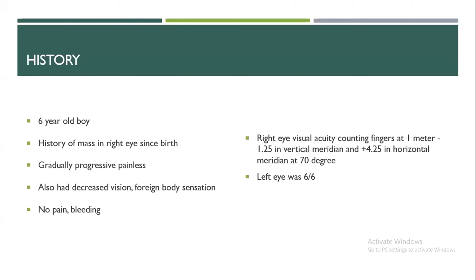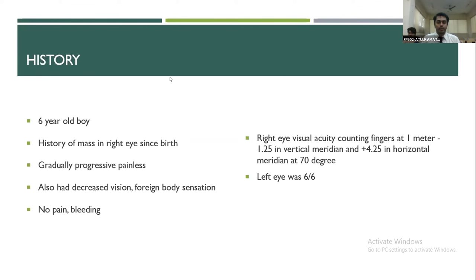The history: a six-year-old boy came with a history of mass in the right eye since birth. It was gradually progressive and painless. He also had decreased vision and foreign body sensation, but there was no pain and bleeding. On visual acuity examination, the right eye was one meter finger counting with a correction of plus 1.25 in the vertical meridian and plus 4.25 cylinder in the horizontal meridian at 70 degrees. The left eye was giving 6/6 vision.